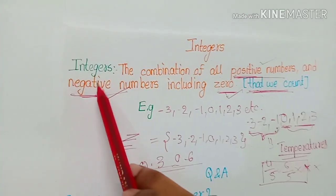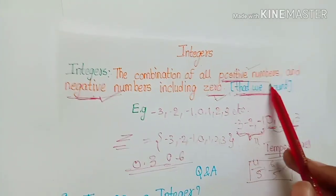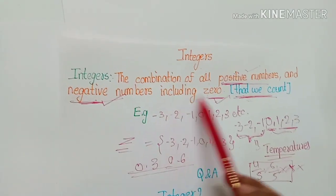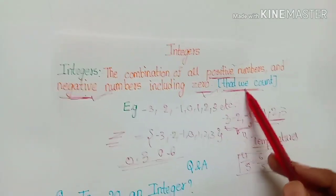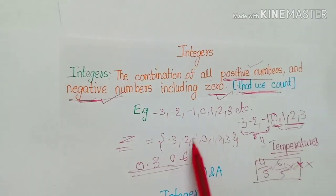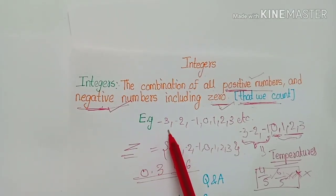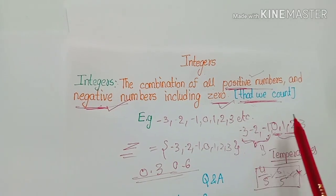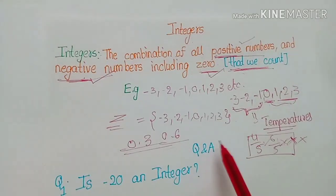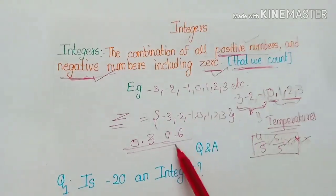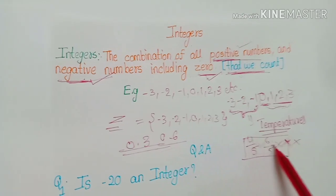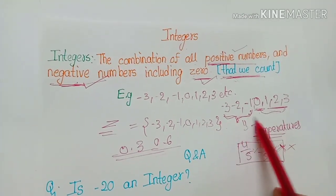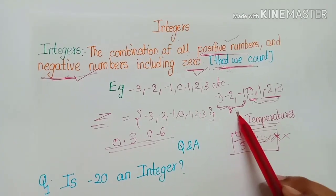To summarize: integers are the combination of all positive numbers and negative numbers including zero that we count. Examples are minus three, minus two, minus one, zero, one, two, three, and so on. Integers do not include decimal numbers and fractions. Negative numbers are used to count things like temperature.